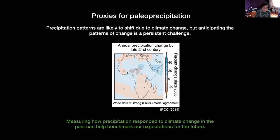I want to back up and talk about the paleoclimate background. Most of the speleothem magnetism work in terms of paleoenvironmental proxies has focused on speleothem magnetism as a paleo-precipitation proxy specifically — inferring the amount of rainfall, like the millimeters per year, in a certain region in the past. This is important, and there's a lot of attention in the paleoclimate community paid to paleo-precipitation proxy in particular.